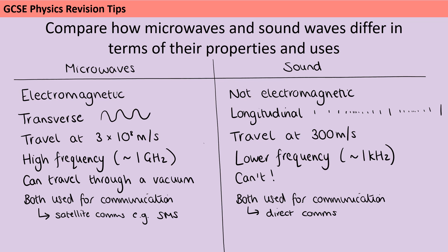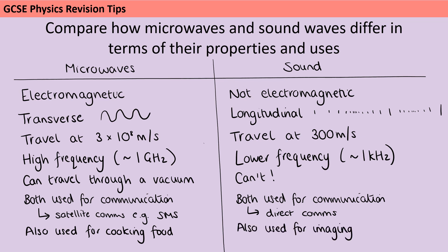We also use microwaves in a microwave oven for cooking food, and we use sound waves for imaging — ultrasound is essentially a sound wave with a different frequency, and it can be used for prenatal imaging, for ships surveying how far it is to the bottom of the sea, and in industry for detecting things like cracks in pipes.